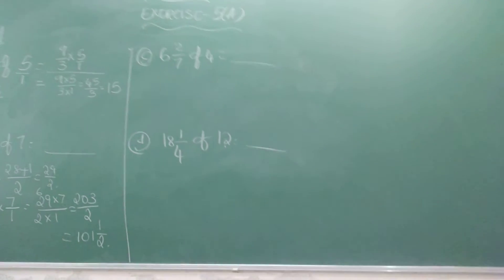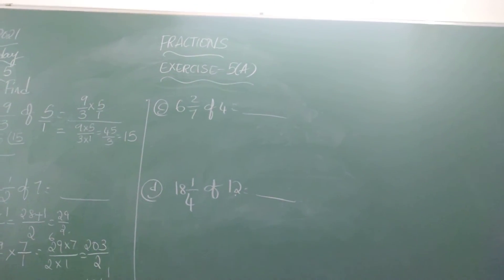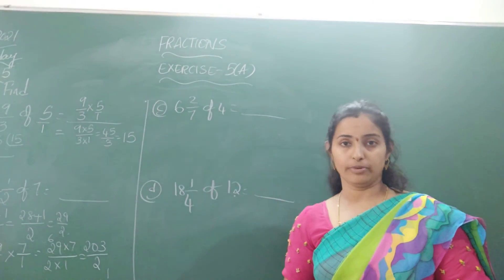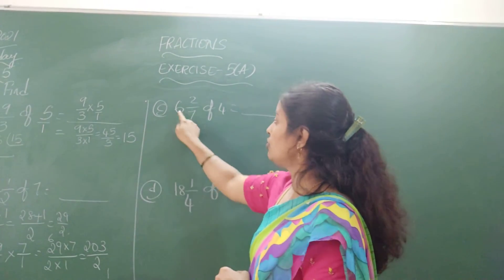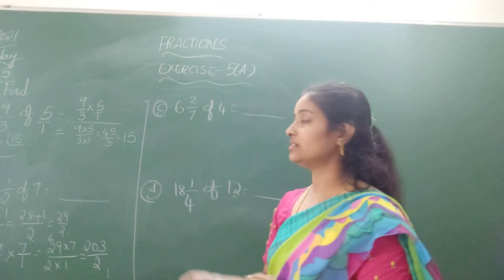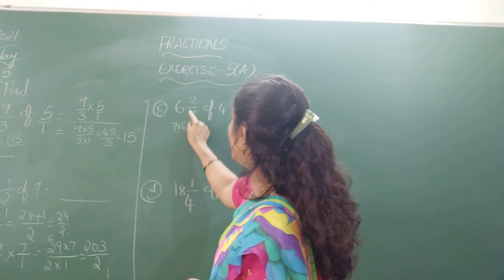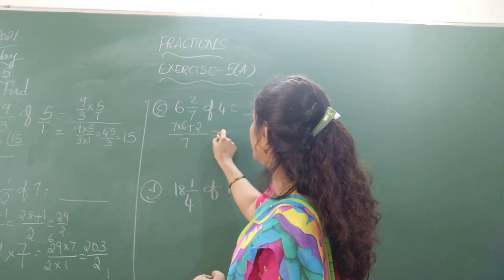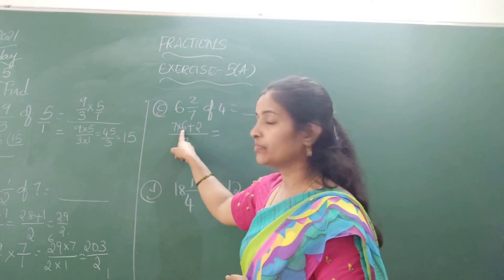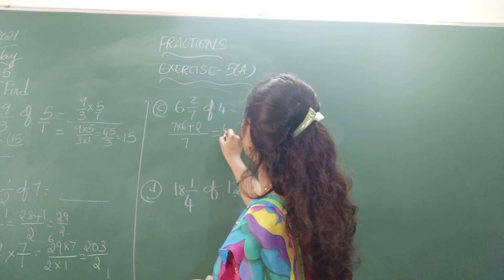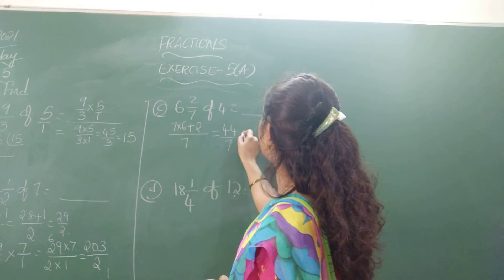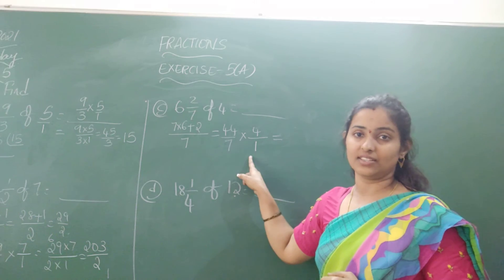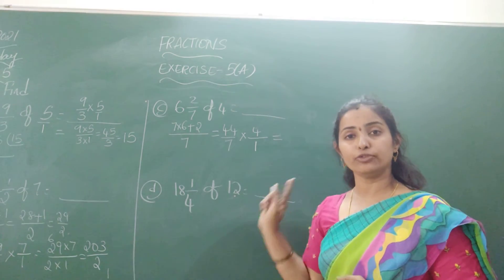Now look at the next question: 6 and 2 by 7 of 4. The given number is a mixed fraction. Let us write it as an improper fraction. Multiply the denominator with the whole number: 7 into 6 plus 2, all upon 7. 7 sixes are 42; 42 plus 2 is 44. So we get 44 by 7. Multiply with 4 — since nothing is in the denominator, we write it as 4 by 1.